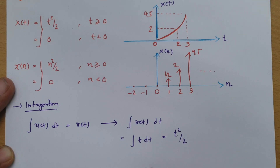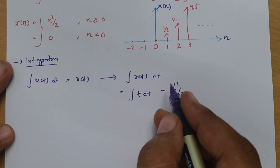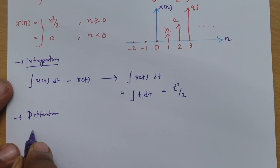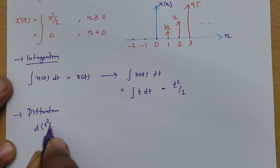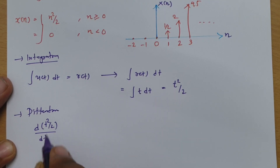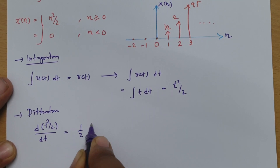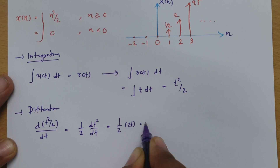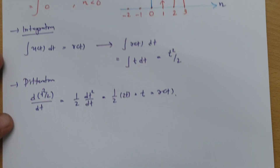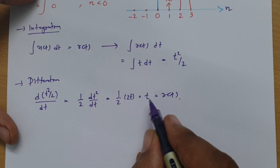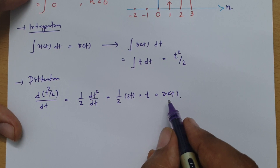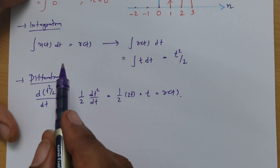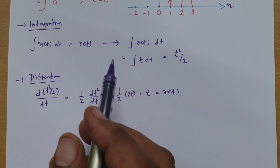Going in the reverse direction using differentiation: the differentiation of the unit parabolic signal gives us d(t squared by 2)/dt. Taking the constant one-half outside and differentiating t squared gives 2t, so half times 2t equals t, which is the ramp signal. If you further differentiate this, that results in the unit step signal. This is how differentiation and integration reveal the relationships between ramp, parabolic, and unit step signals.